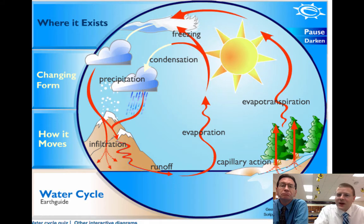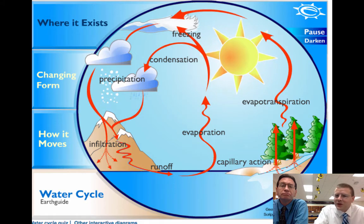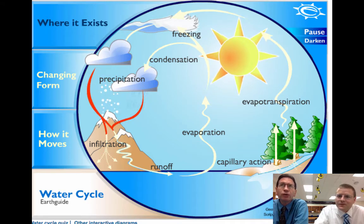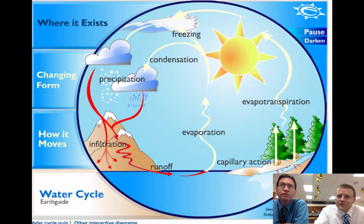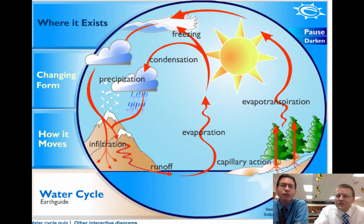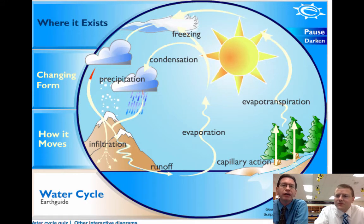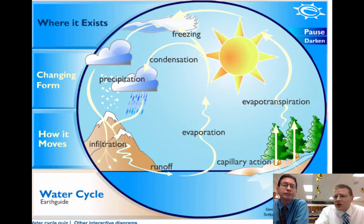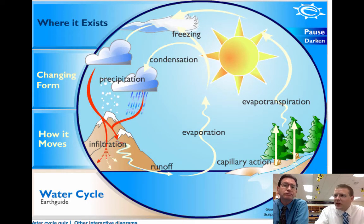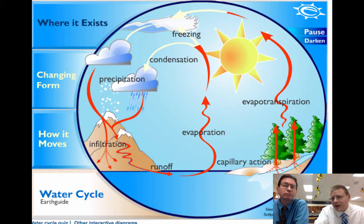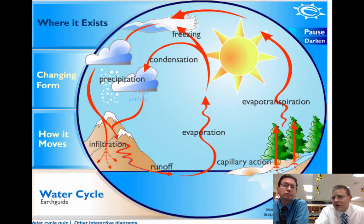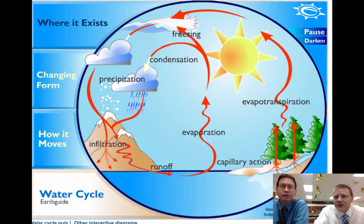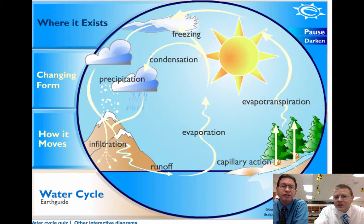When it reaches up high in the atmosphere, it will condense. What does that mean? When water vapor gets cool, its molecules come closer together and it turns back to water again. Generally we see that in the form of clouds. If it's a lower cloud, it's water vapor hovering in the air. If it's really high in the air, it can actually freeze into little ice crystals — like in cirrus clouds.